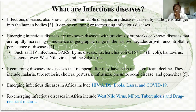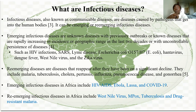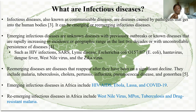Emerging infectious diseases are diseases that were previously unknown or had no prior outbreak, or diseases that have significantly increased in incidence and spread more widely in the last two decades — sometimes showing uncontrollable resistance. Examples include HIV, dengue fever, West Nile virus, Zika virus, and SARS.